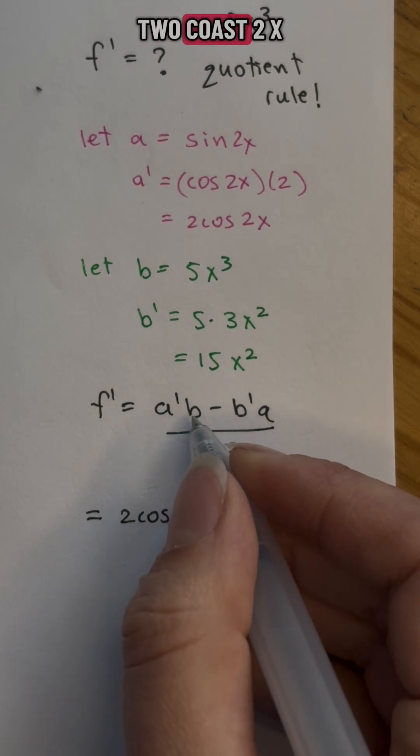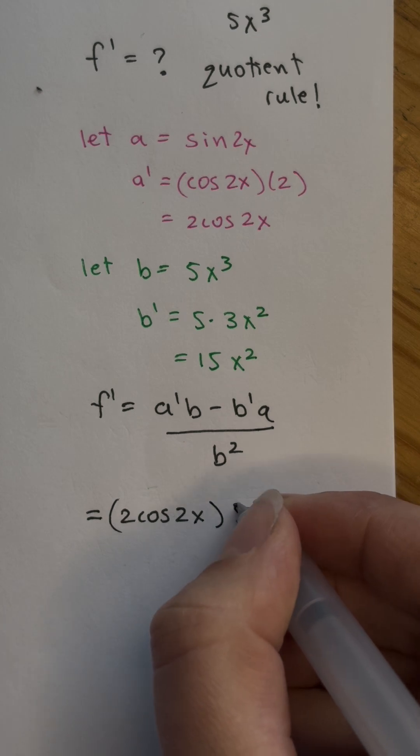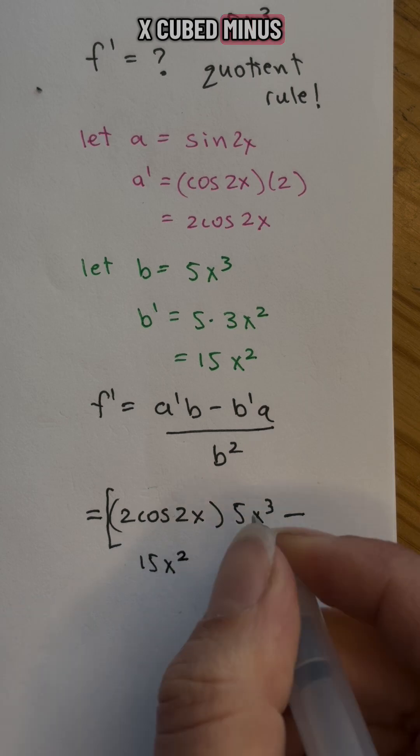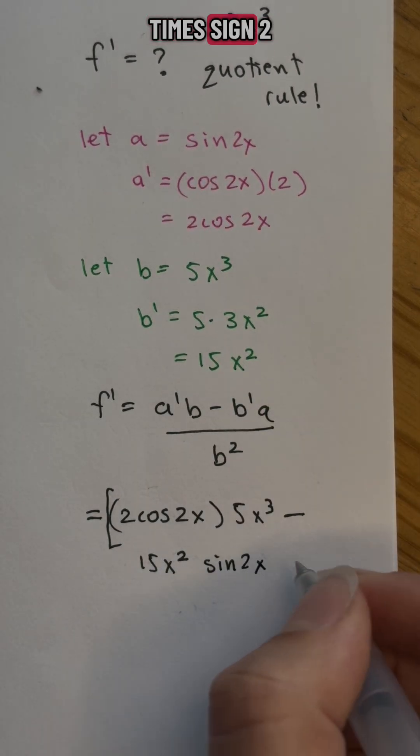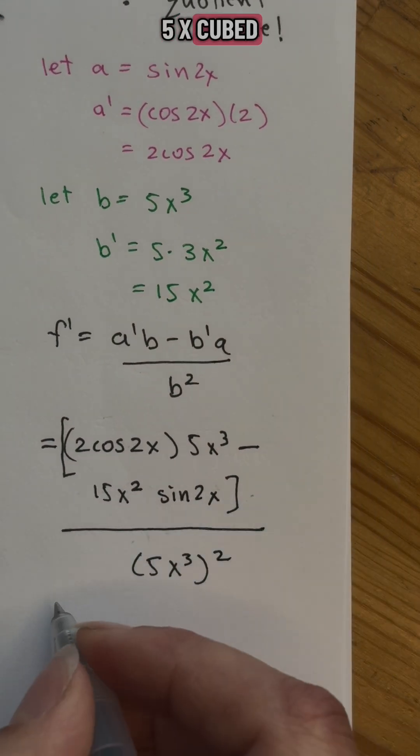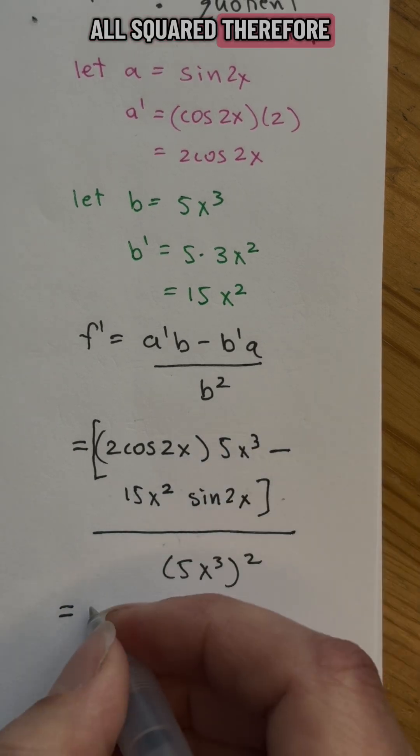So we have 2 cos 2x multiplied by 5x cubed minus 15x squared times sine 2x all over 5x cubed all squared. Therefore,